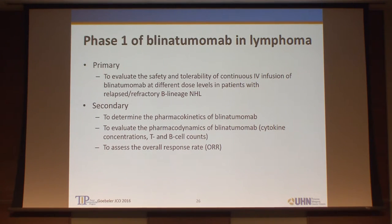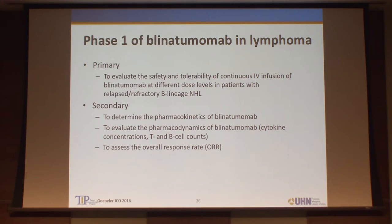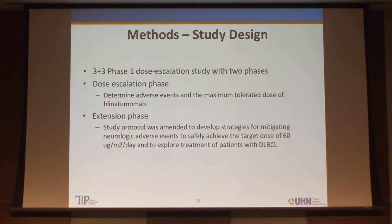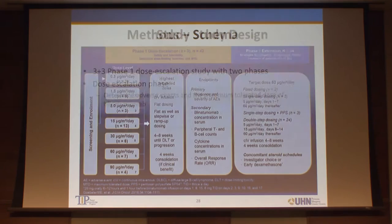Switching gears to the slightly more common disease of non-Hodgkin's lymphoma: the phase I was also published by the German group this year in the JCO. This phase I looked at a number of different dosing schedules with standard phase I endpoints including PK and PD, and early signs of response. It was a traditional 3+3 dose escalation study with two phases — first a dose escalation phase, then an extension phase when they achieved their target dose of 60 micrograms per meter squared per day.